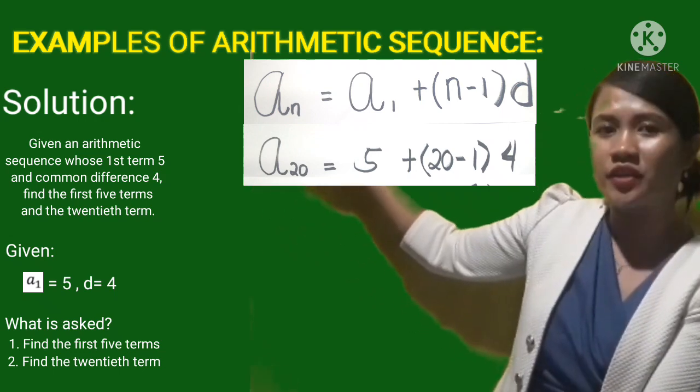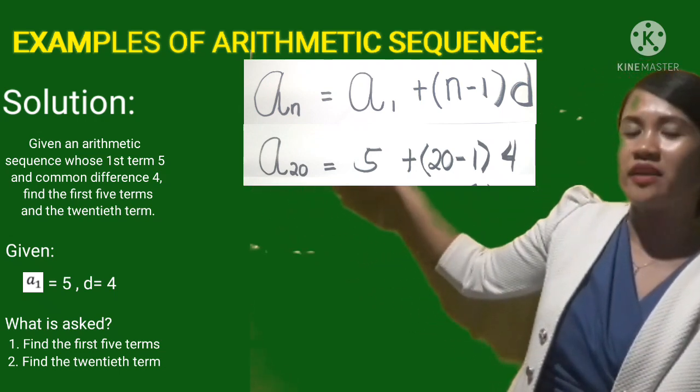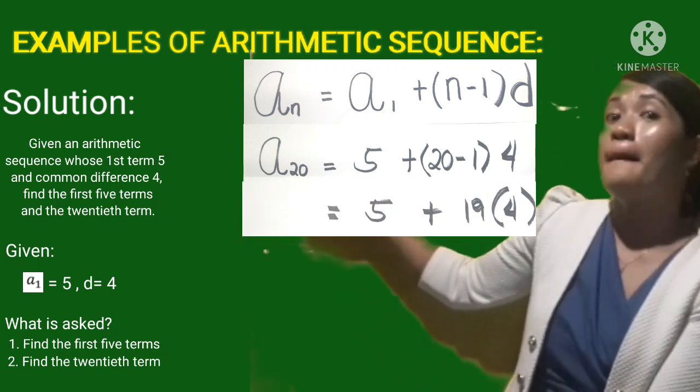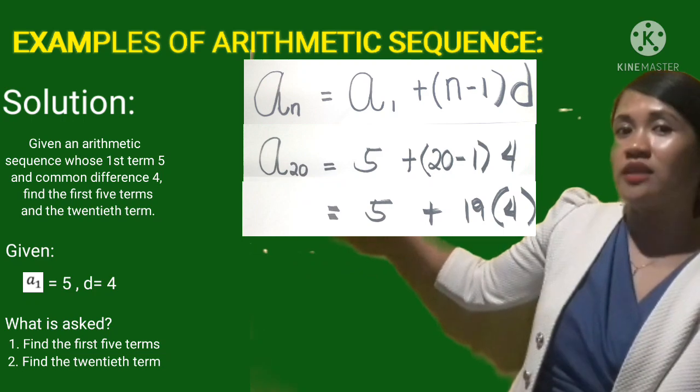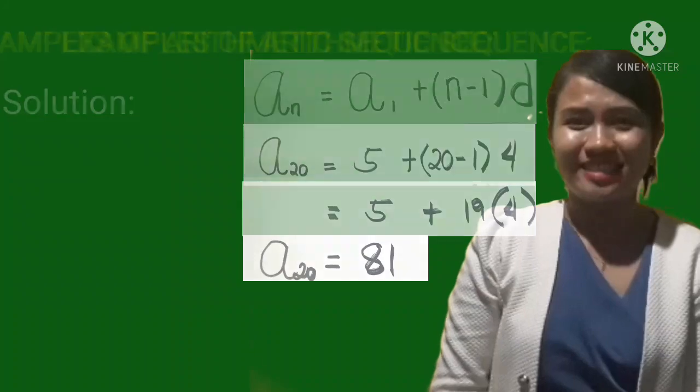So A sub 20 is equal to the first term is 5, plus n is 20 minus 1 times the d, that is 4. So we have 5, plus 20 minus 1 is 19, times 4, that is 76, plus 5, that is 81.